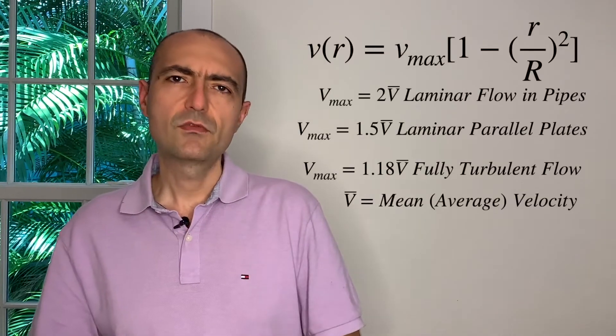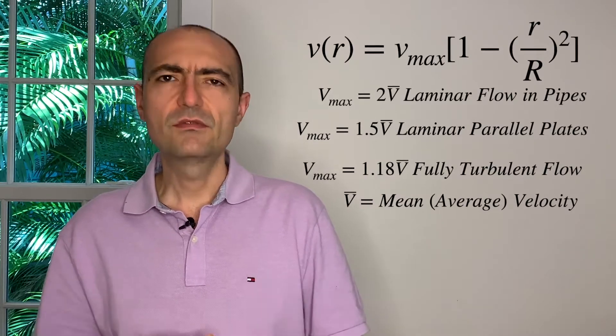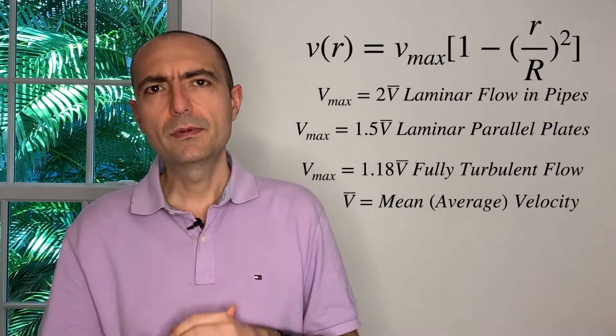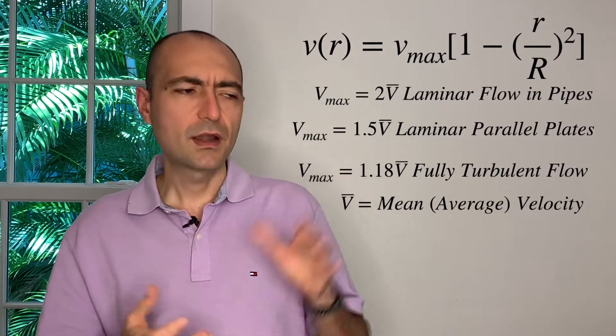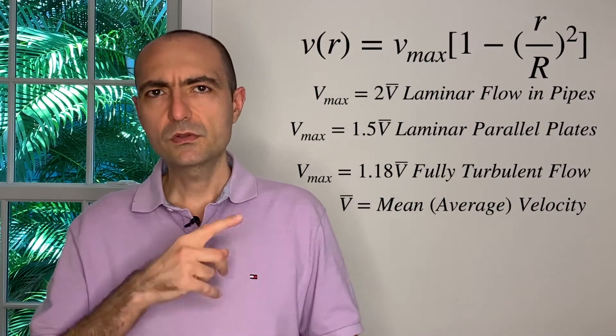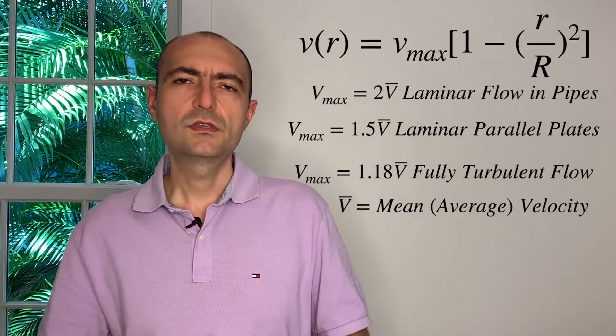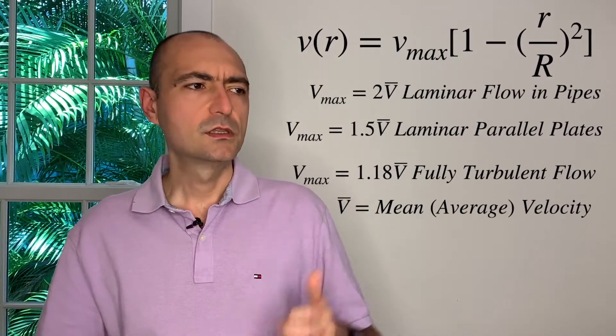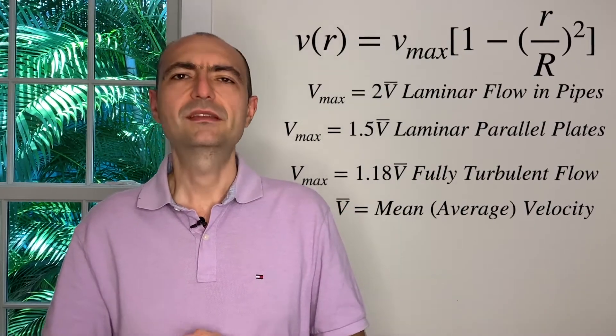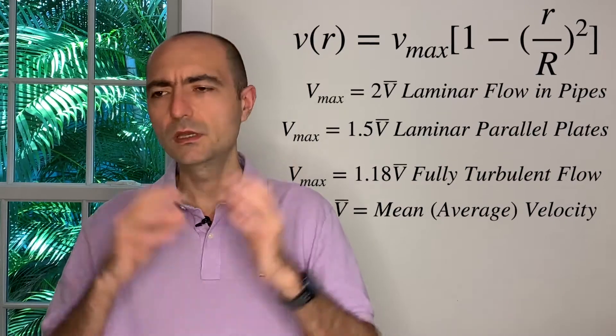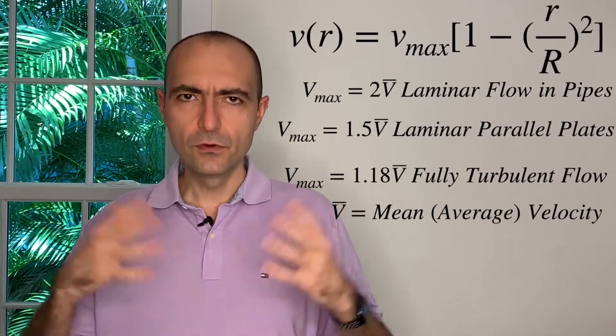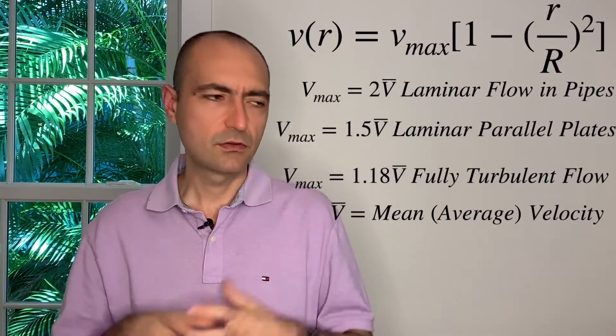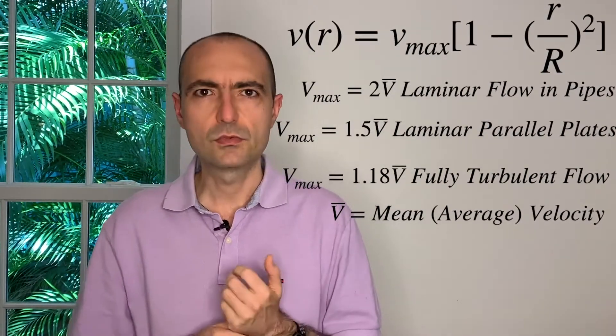And you see this Vmax? That will be two times the mean velocity, or the average velocity, if I have a pipe. It will be 1.5 times if it is for parallel plates. But those are only for laminar. And if this is turbulent, what will happen is, this Vmax will be 1.18 times the V mean for fully turbulent flow, but note that it's rare to see fully turbulent flow in real life. There will always be some kind of laminar incorporated to it.